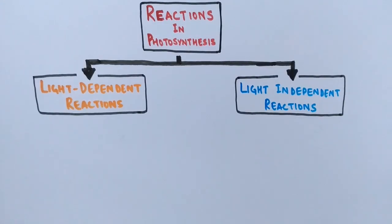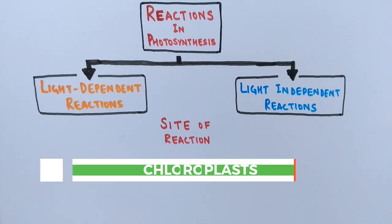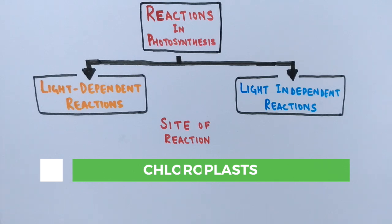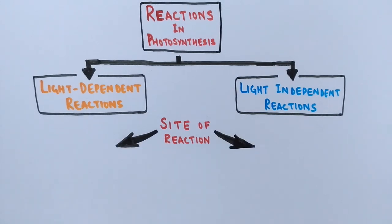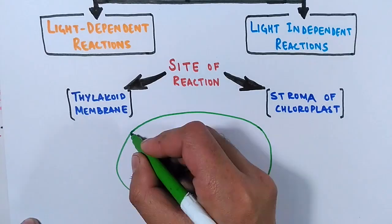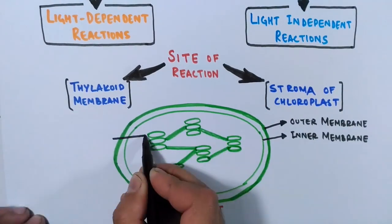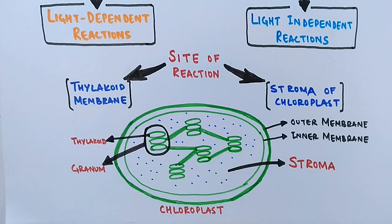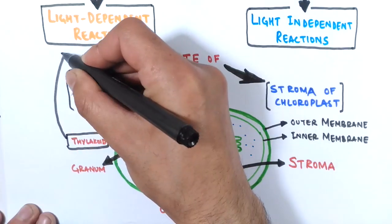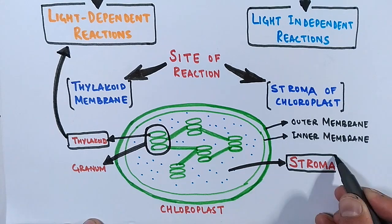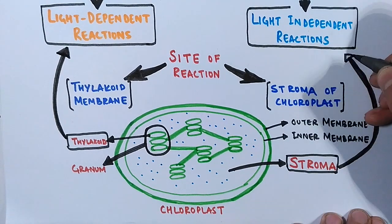Before discussing these reactions, let's look at the site of reactions inside the cell. There are specialized cell organelles in phototrophs called chloroplasts, which contain chlorophyll pigment. The light-dependent reactions occur in the thylakoid membranes — membrane-bound compartments inside chloroplasts and cyanobacteria. The light-independent reactions occur in the stroma of the chloroplasts. Within the chloroplast structure, thylakoids are connected by lamellae, and all these structures are embedded in the fluid medium called stroma.